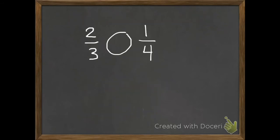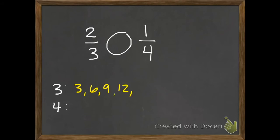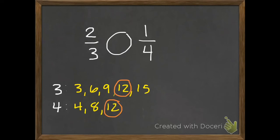Here's one more example: 2 thirds and 1 fourth. We're going to use our strategy of finding the least common multiple. I'm going to use my denominators again, 3 and 4. The multiples of 3 are 3, 6, 9, 12, 15. Our multiples of 4 are 4, 8, 12. And there we go — they both have 12 as a multiple, so the least common multiple is 12.